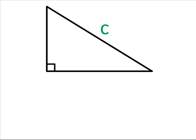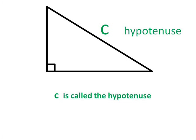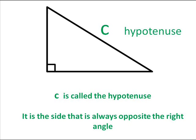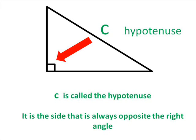So the longest side is called C. Another name for this is the hypotenuse. The hypotenuse is always the side that is opposite to the right angle.